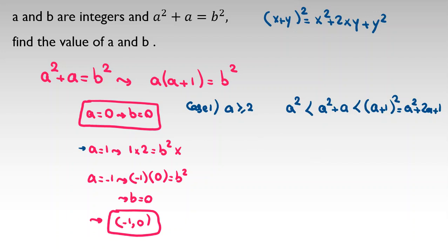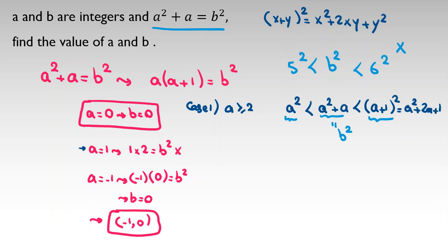This is a very important and useful idea: the value lies strictly between two consecutive perfect squares. For example, if a number is between 5² and 6², then b squared cannot equal any perfect square in that range — it can't be 5 squared and can't be 6 squared. So this is a contradiction, and the positive case beyond a=1 is impossible.